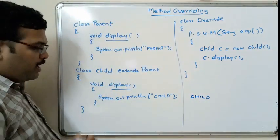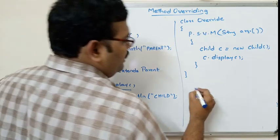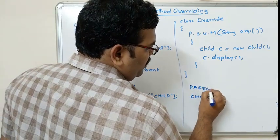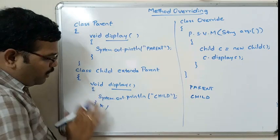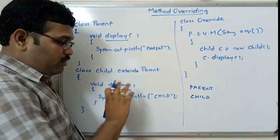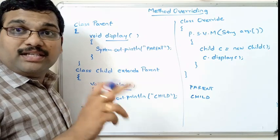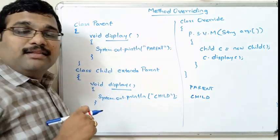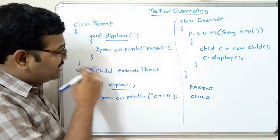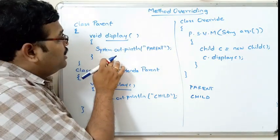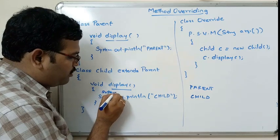If you access c.display, 'Child' will be printed as output. In the absence of the display method in the Child class, 'Parent' would be the output. If you want to execute both the Child method and the Parent method, we have to use the super keyword which we discussed in the previous session. The super keyword is used to access the instance variables and methods of the immediate parent class.